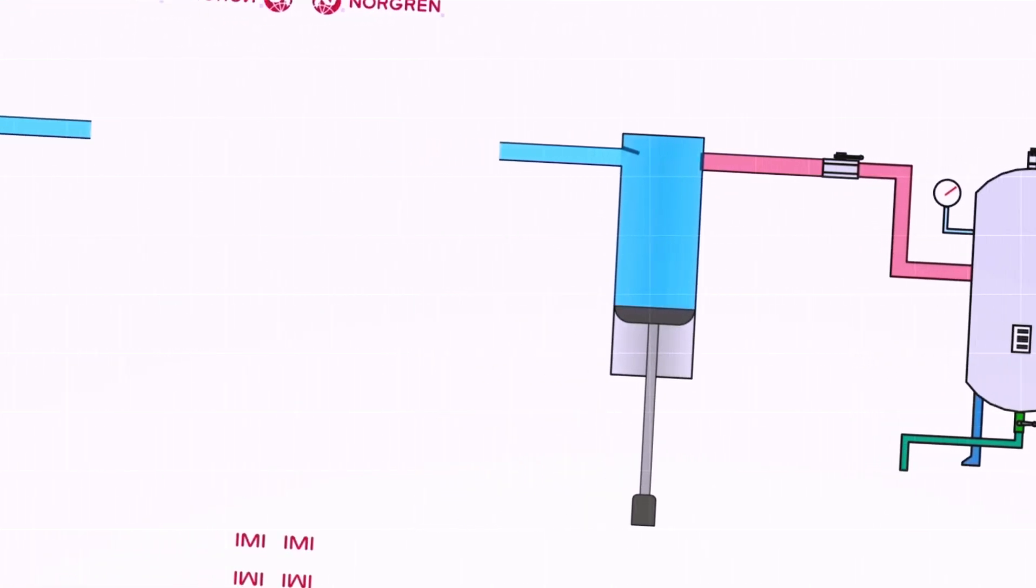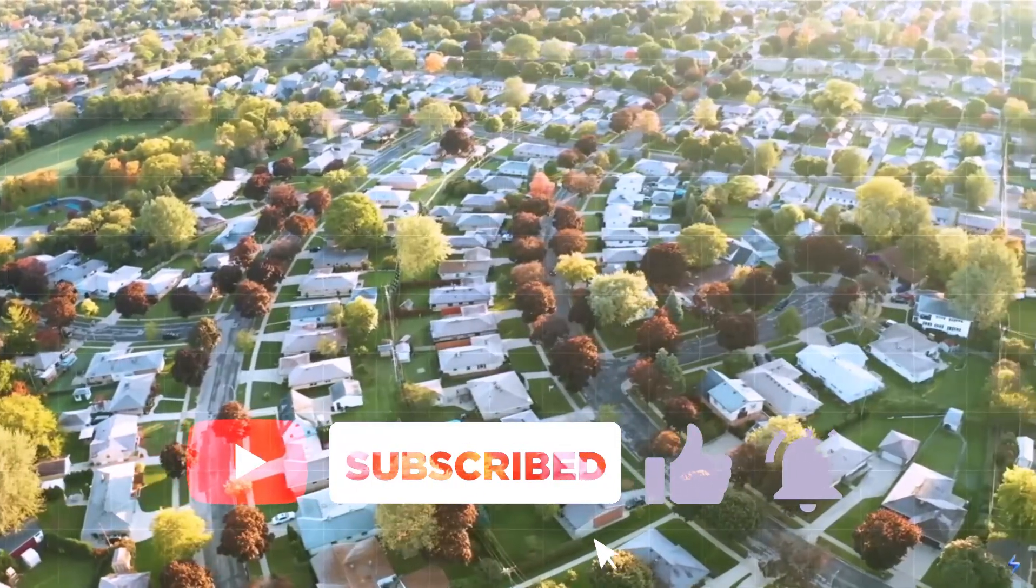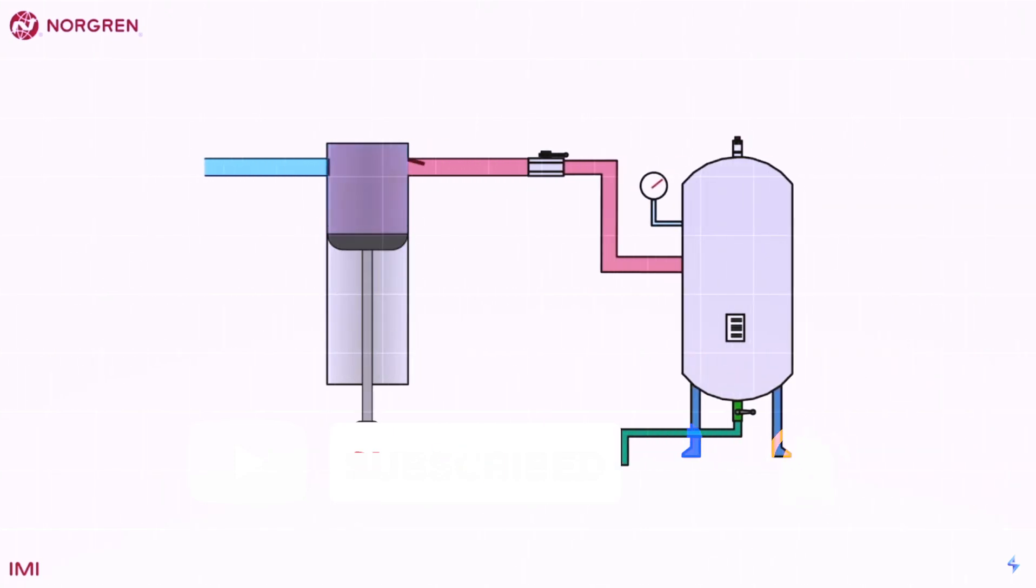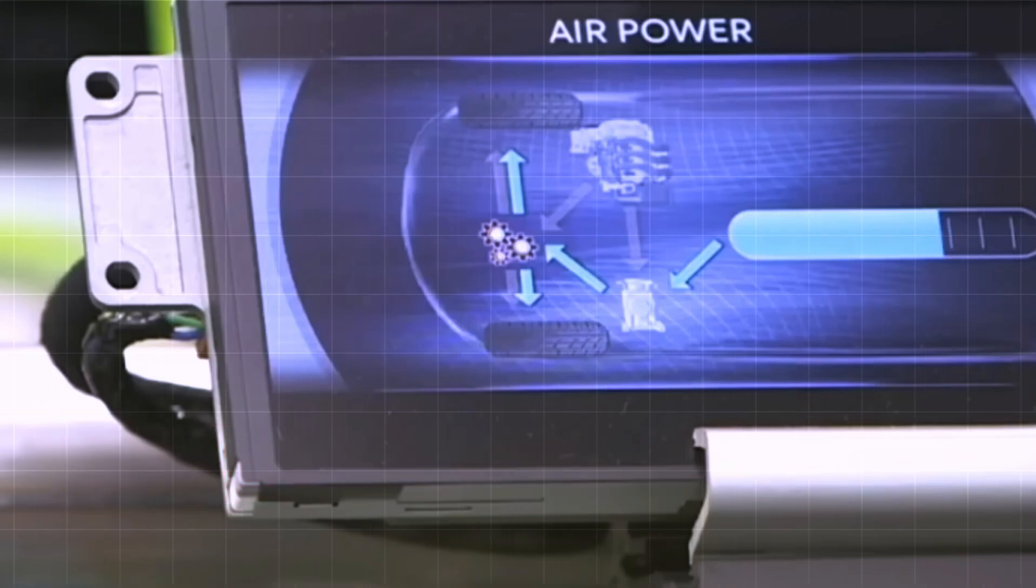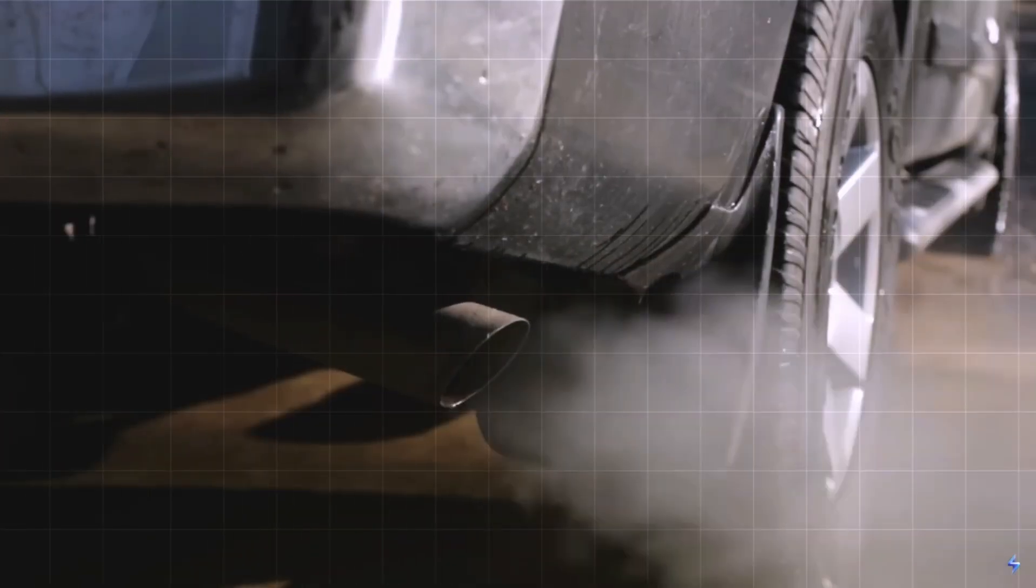Compressed air engines also have an edge over EVs in terms of cost and environmental impact. They are far cheaper to produce and require no rare-earth materials, unlike batteries or electric motors. Additionally, powering EVs isn't as green as it seems, as the grid still relies heavily on fossil fuels for electricity generation.